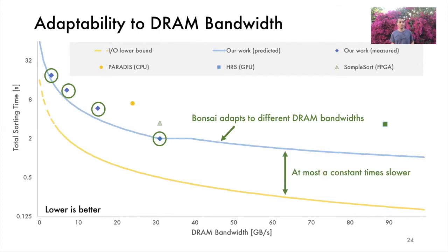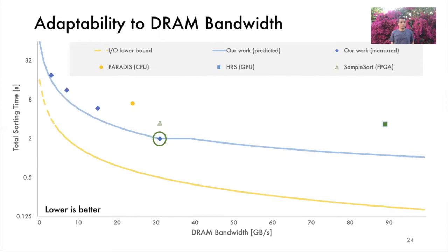Indeed, the four listed Bonsai results all use different merge trees. Finally, no matter how fast future memory bandwidth gets, the optimal Bonsai design will always be at most a fixed constant factor worse than the IO lower bound. The Bonsai design at 32 gigabytes per second is optimal for the AWS F1 FPGA instance. It uses a single P equals 32 and L equals 64 tree.